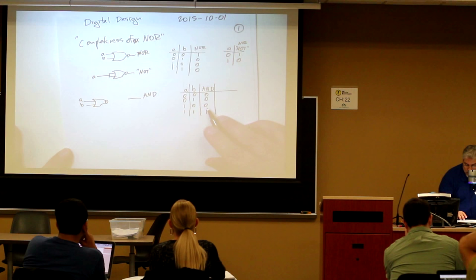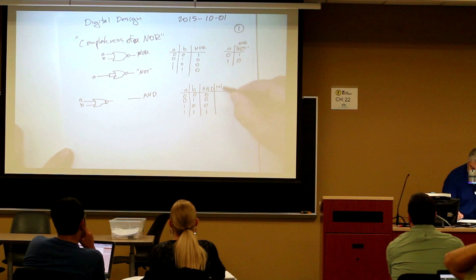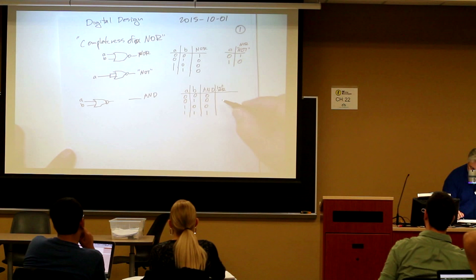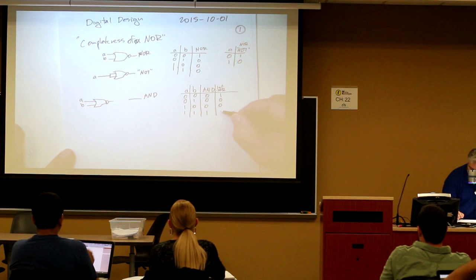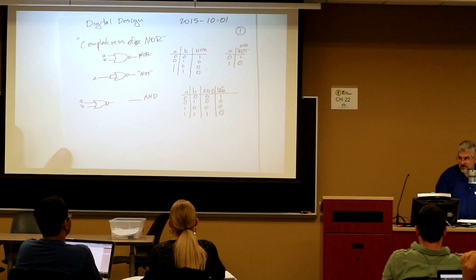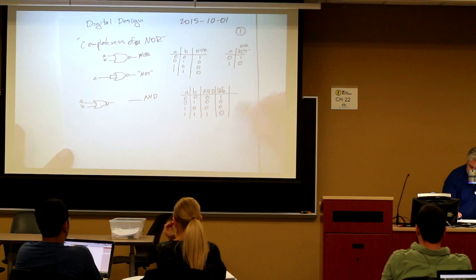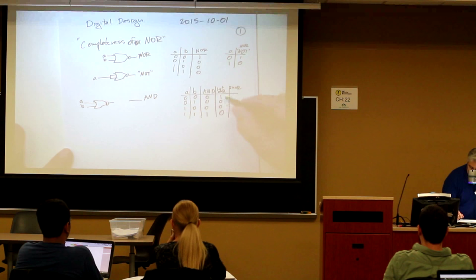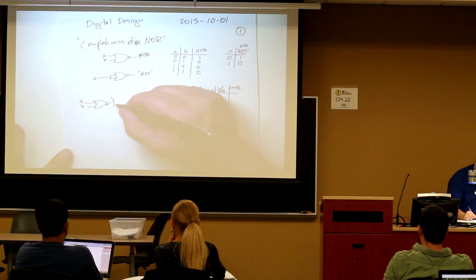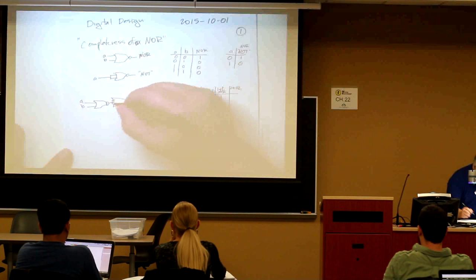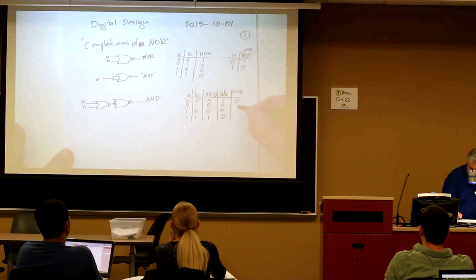And so if we add a second NOR there and you tie it together, then you actually get an inverse, zero, one, one, one. Oh, that's not an AND gate. That's an OR gate.